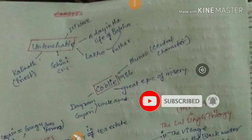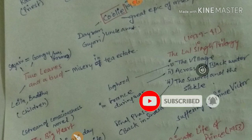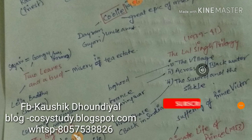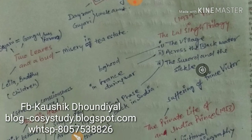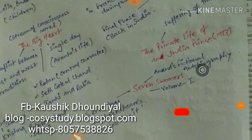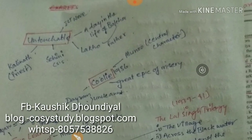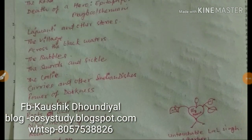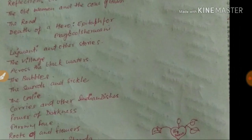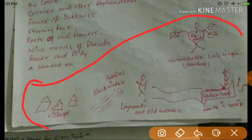In this video, I will be talking about the works Untouchable, Coolie, Two Leaves and a Bird — all works by Mulk Raj Anand. At the end of this video, I will be giving you a shortcut for remembering all these works with a story and picturization. Other works include the Lal Singh Trilogy, The Big Heart, The Private Life of an Indian Prince, Seven Summers, and Morning Face.